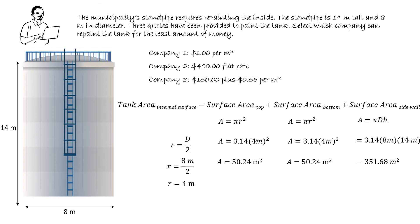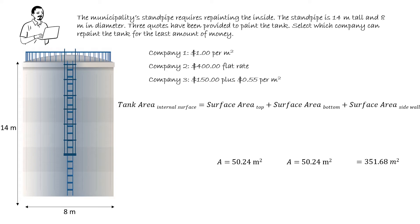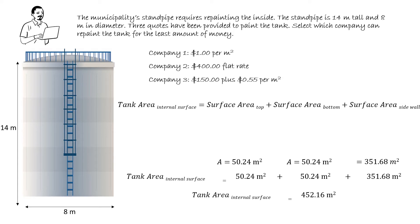The total tank area is the summation of those three surface areas. Therefore, the total area is equal to 50.24 square metres plus 50.24 square metres plus 351.68 square metres, for a grand total of 452.16 square metres.